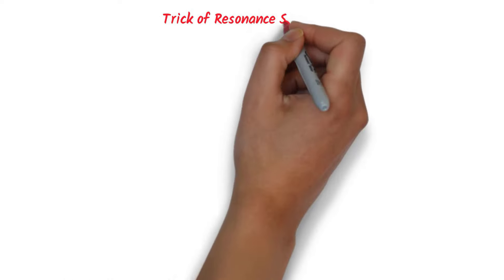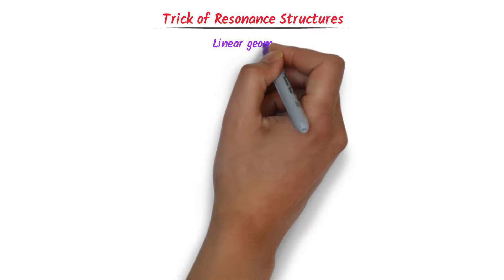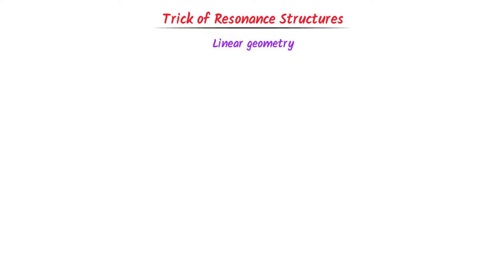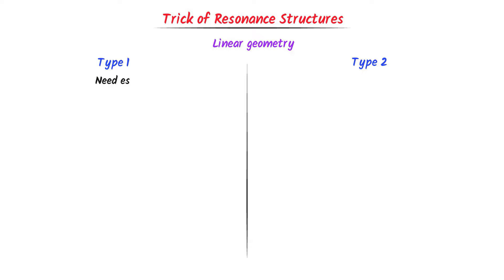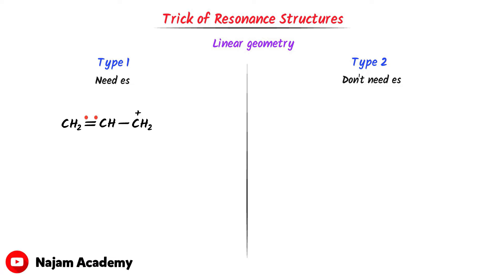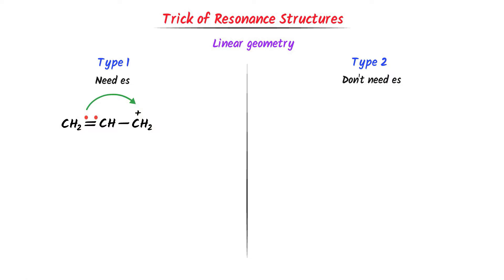Now let me teach you my personal easy trick for resonance structures. We will learn the resonance structures of linear geometry molecules. I divide them into two types: type 1 and type 2. For type 1, I write 'need electrons.' Consider this molecule. We already know that there are pi electrons present in this pi bond. This positive sign means that this carbon needs one electron. Hence, this one pi electron will shift from the first carbon to the third carbon. We get this new structure.